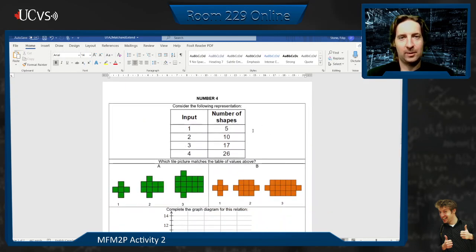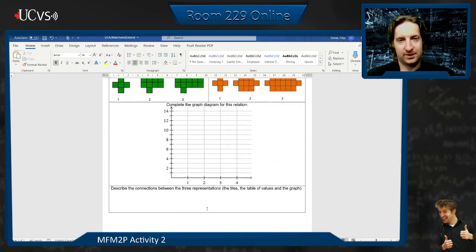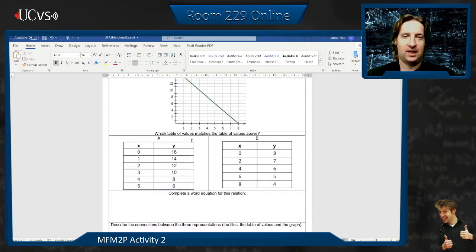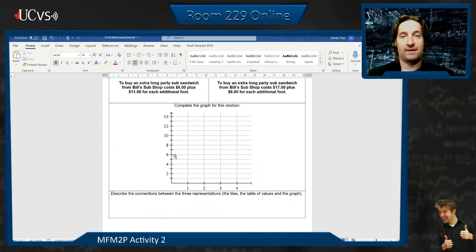Next one here, we have a table of values. Then we have some tiles. Make a graph out of it. Then tell me the connection between them. And so on and so forth. How many is there all together? Six. No, sorry. I apologize. There's seven.